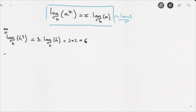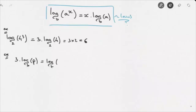Or we may be asked to simplify 3 times log base B of P. Using this third law of logarithms, we can say this equals log base B of P to the power of 3.